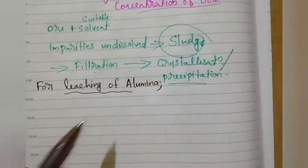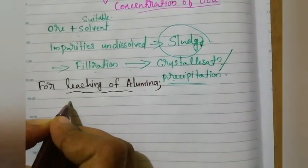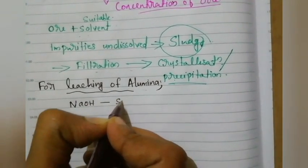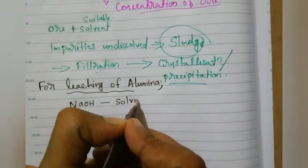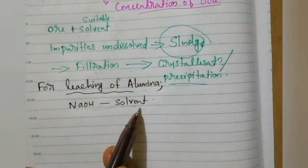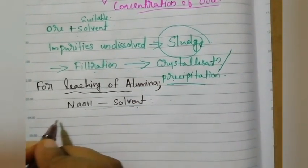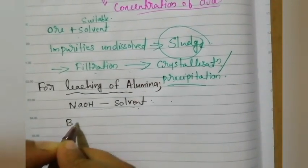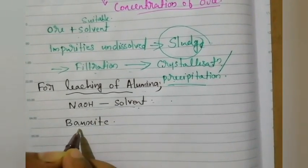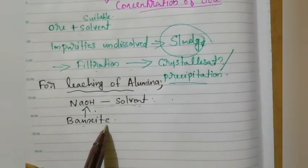Now, how to carry out the leaching of alumina from bauxite? We need to concentrate here. We need to use NaOH as the solvent — NaOH is the suitable solvent for the leaching of alumina from bauxite, because bauxite will be soluble in NaOH. That is why we prefer NaOH as the best solvent for the leaching of alumina.